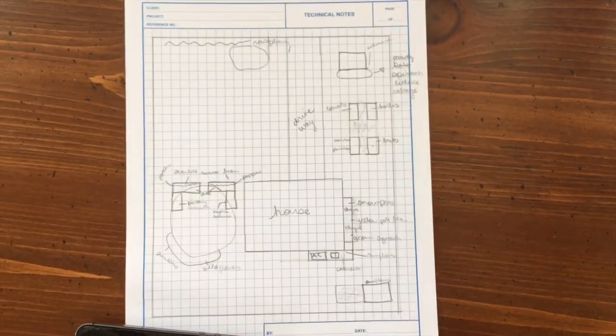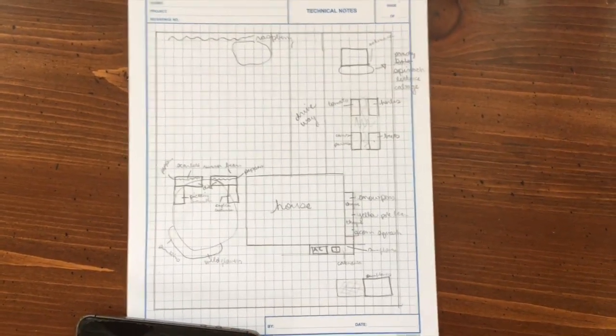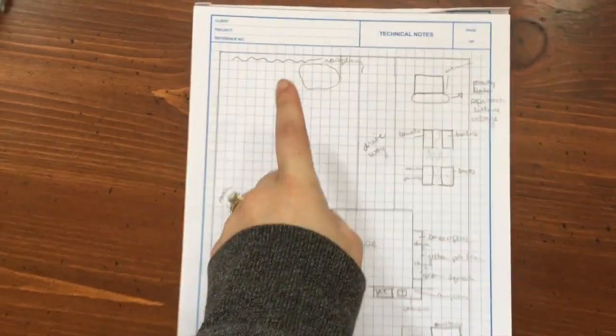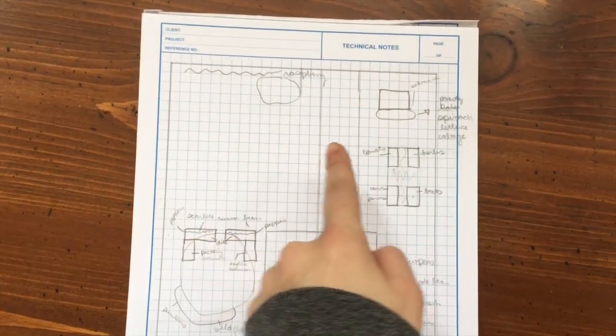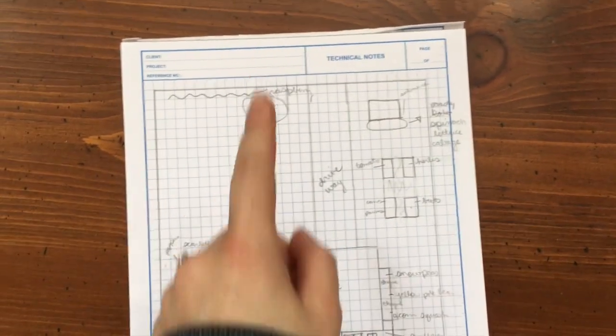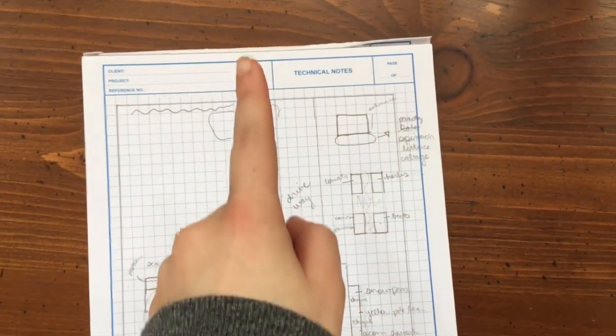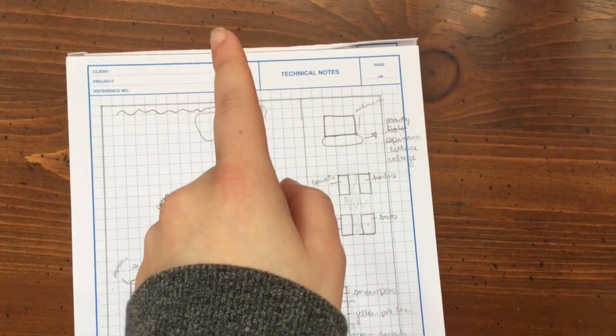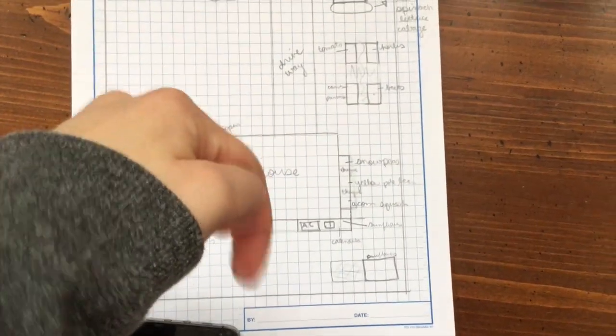So that's pretty much what our property looks like. If you are curious, north is this way, south is this way, that way is east and then west.